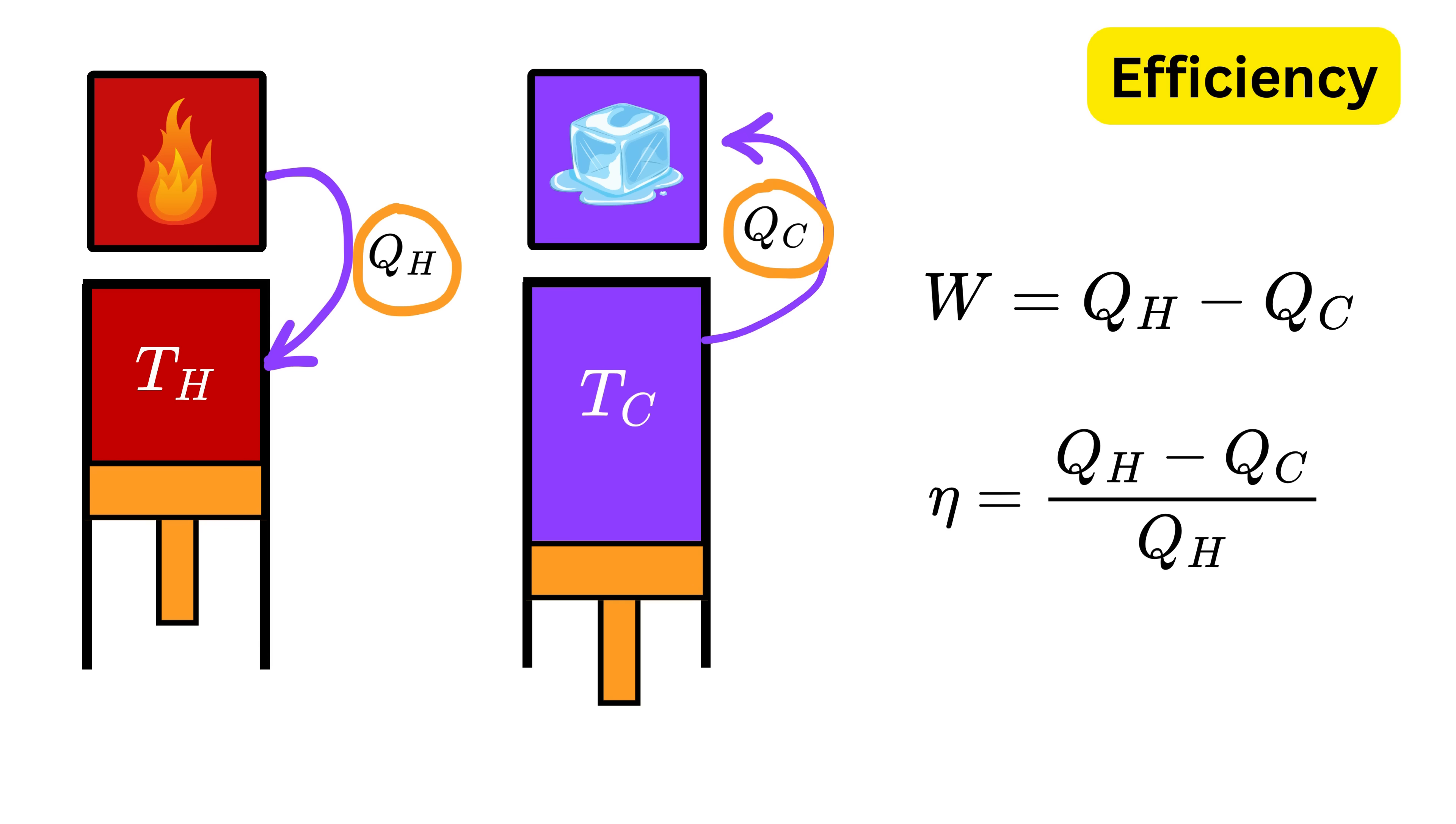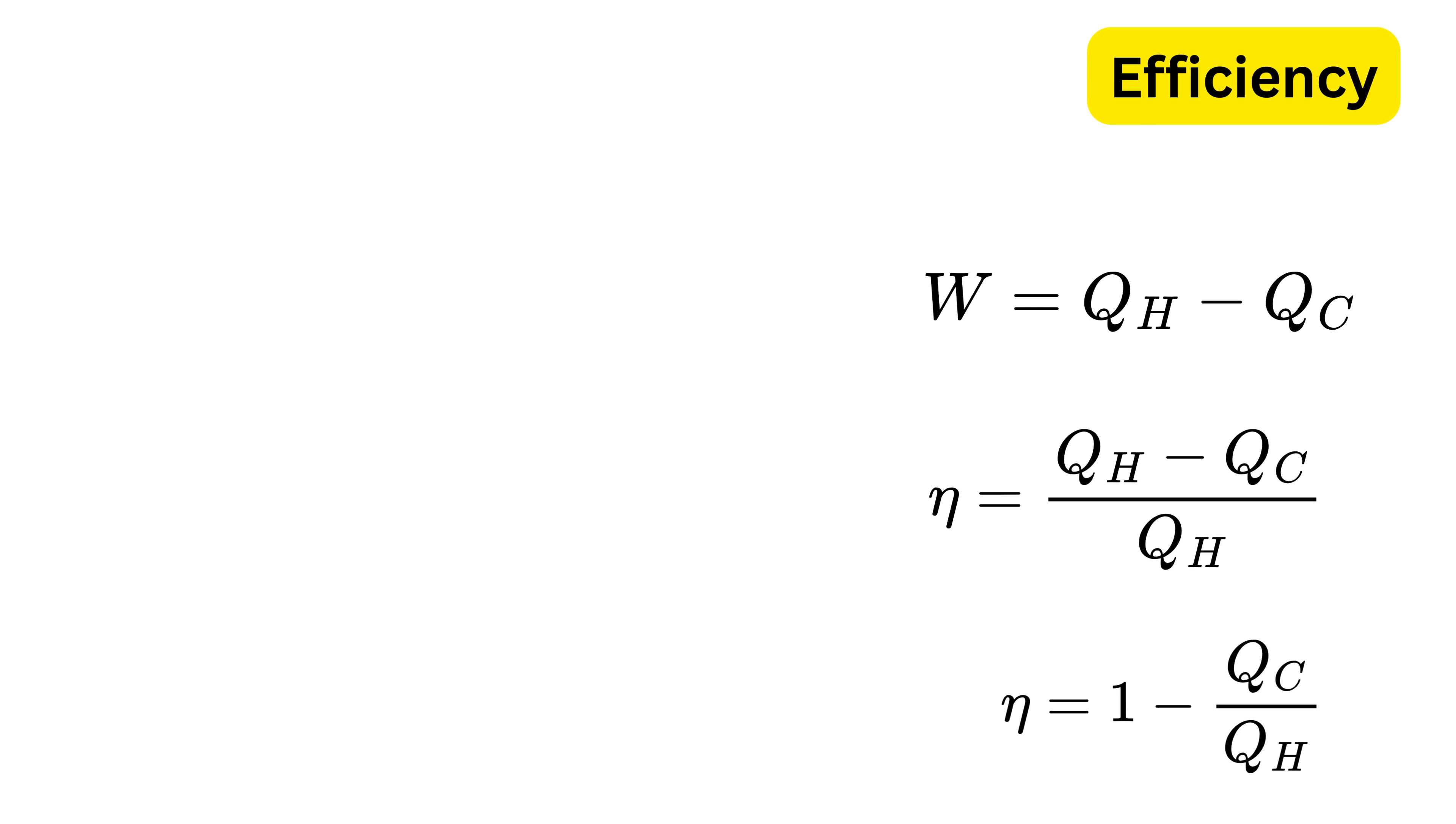To calculate this, we take the useful work, which is Q_h minus Q_c, and divide it by the total input heat Q_h. This gives us efficiency equals this. Now Carnot showed something elegant about reversible cycles. For a reversible heat engine, Q_h divided by T_h equals Q_c divided by T_c.